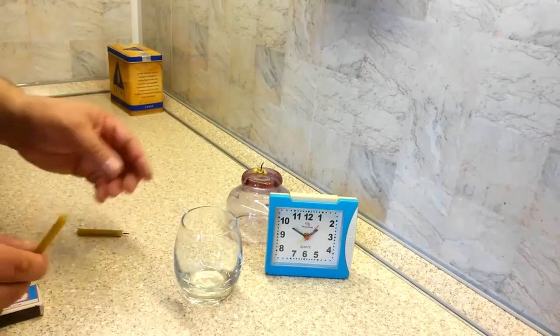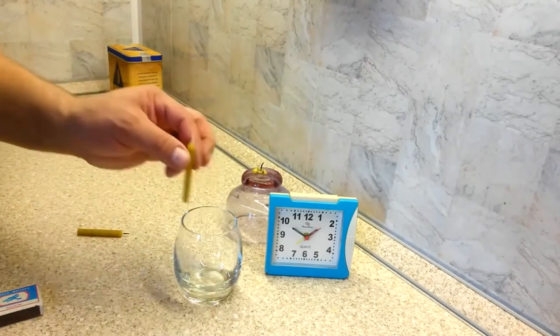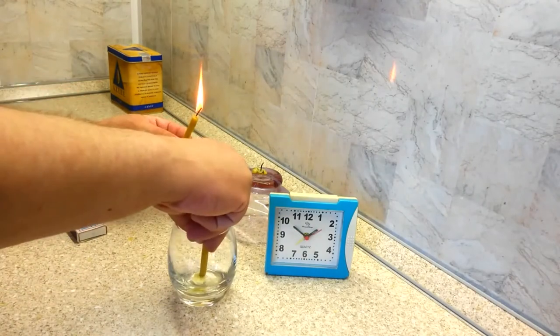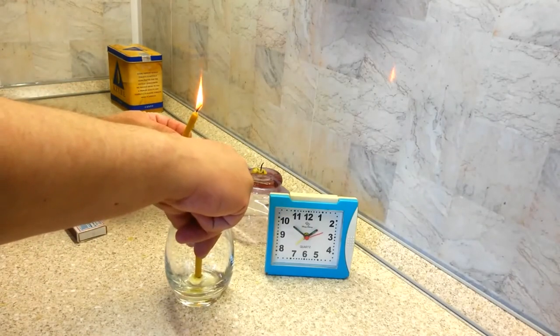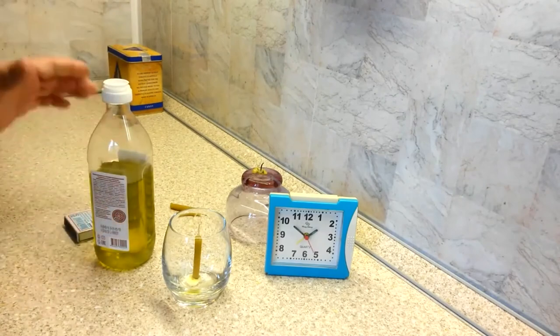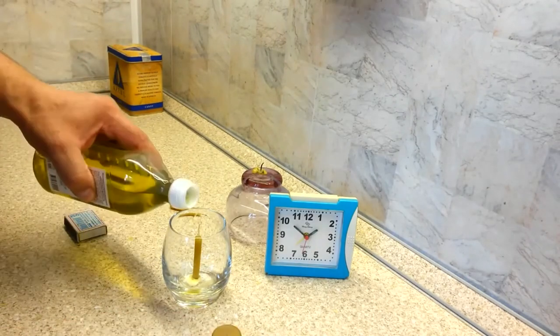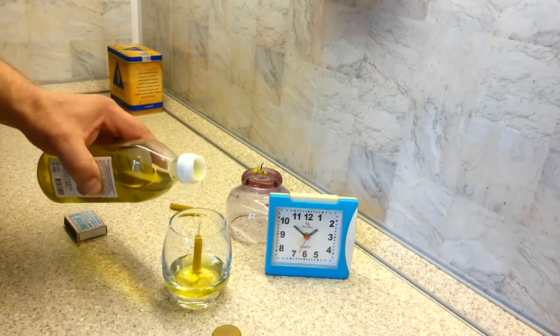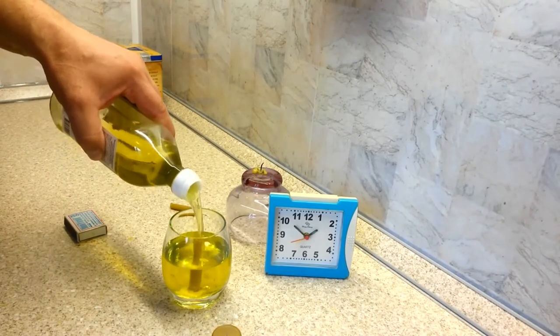We need to take a glass cup, glue a candle inside, and drip a little wax. Then we take any oil, sunflower or olive, and fill in the oil so that it covers the base of the candle.